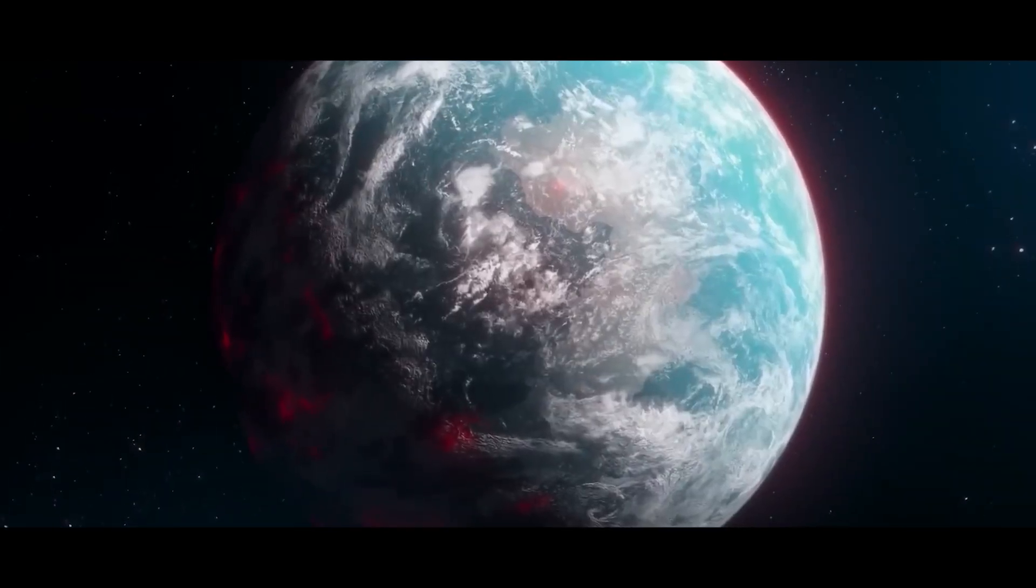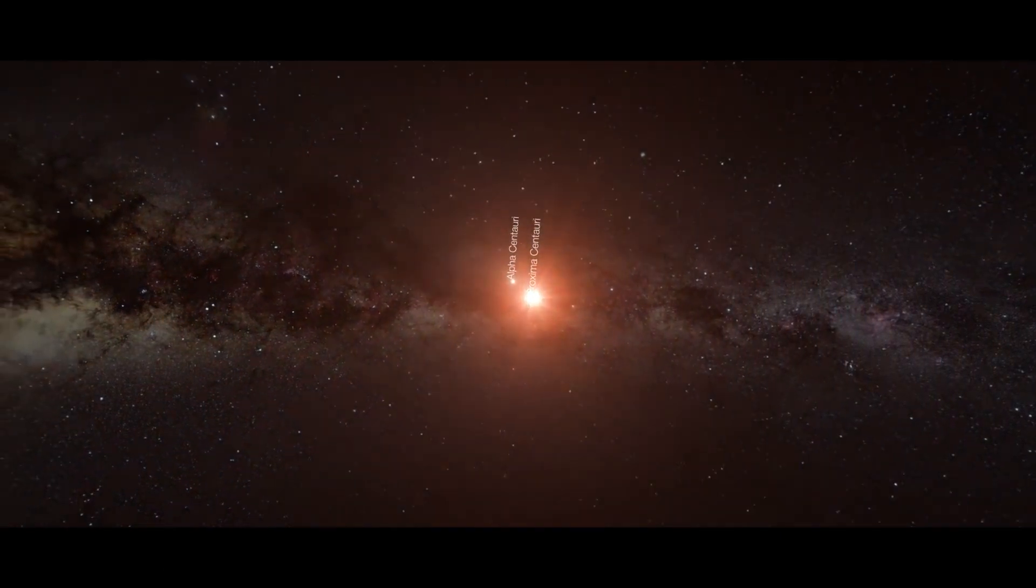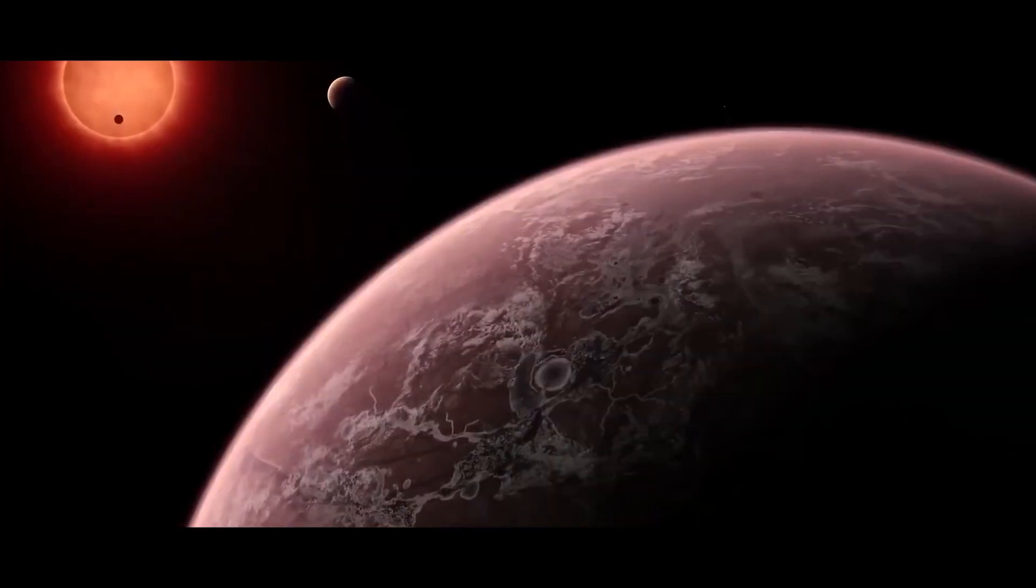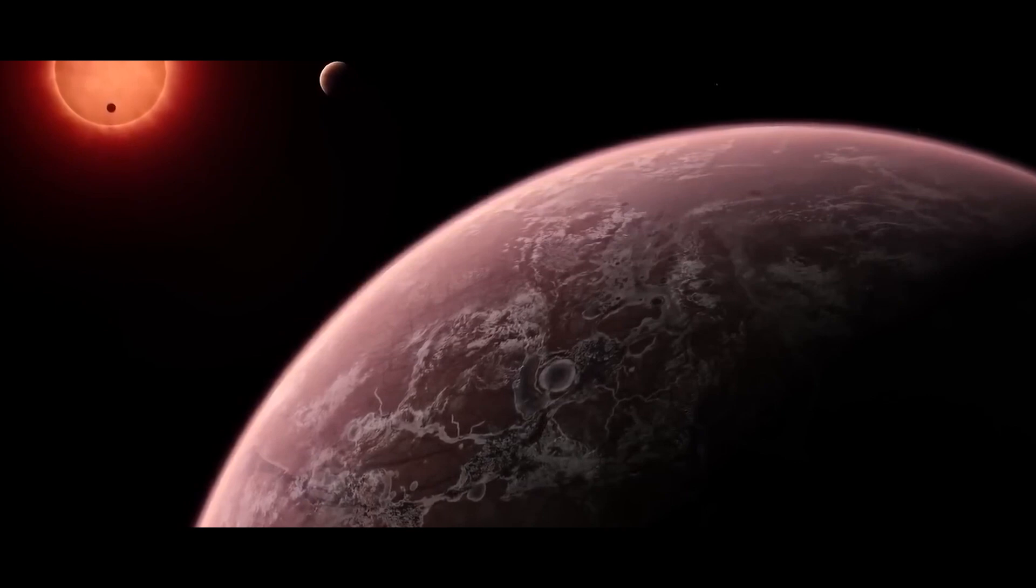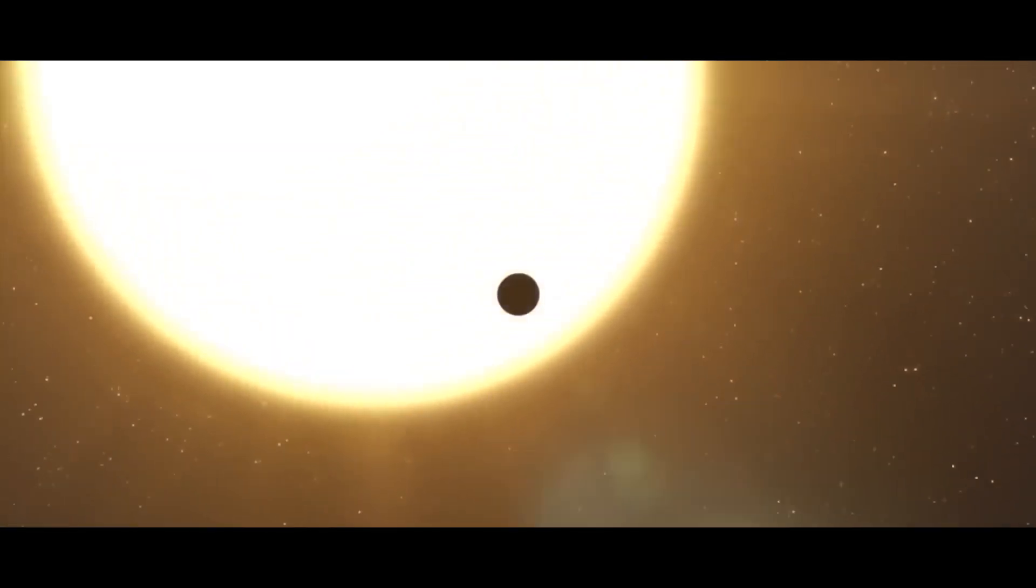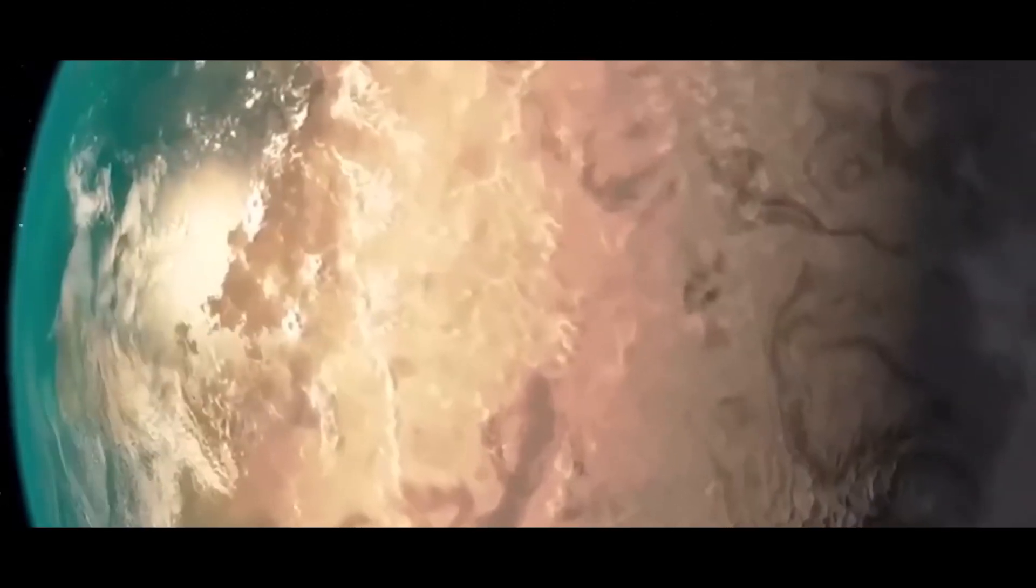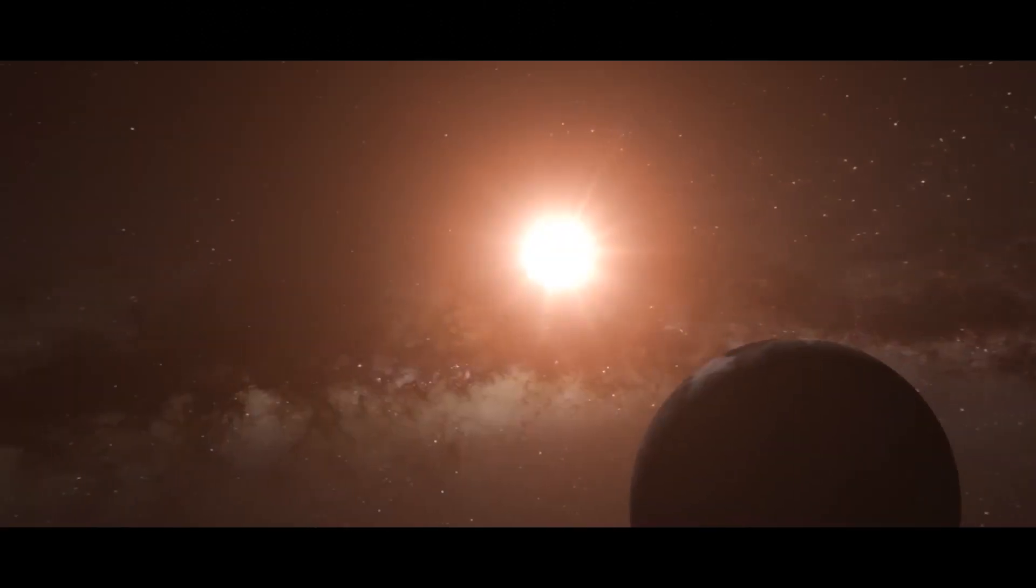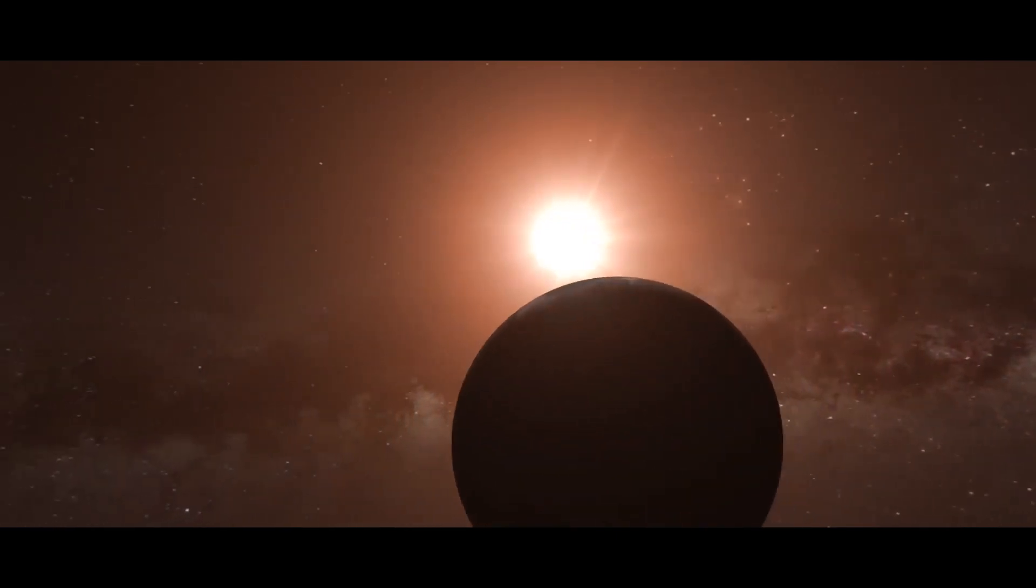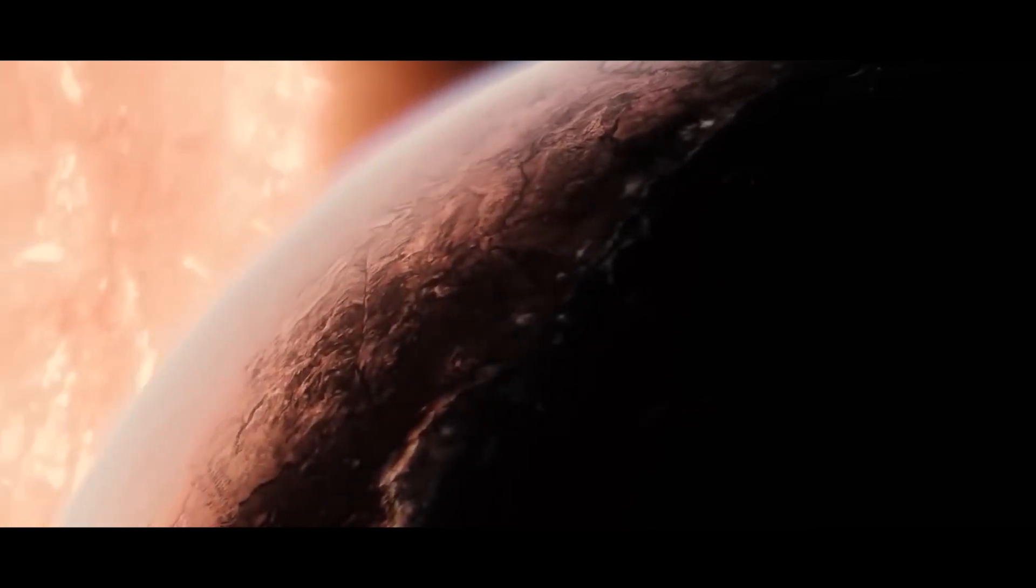Scientists believe that Proxima B, confirmed in 2016, is located in Proxima Centauri's habitable zone. Proxima Centauri has a mass that is roughly 12.5% that of the Sun, and an average density 33 times that of the Sun. With a radius that is one-third our size and around one-sixth the Earth's mass, Proxima B orbits Proxima Centauri in approximately 11.2 Earth days.